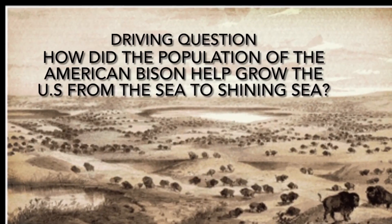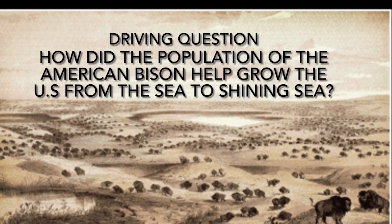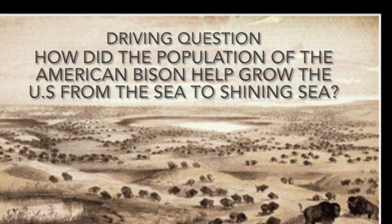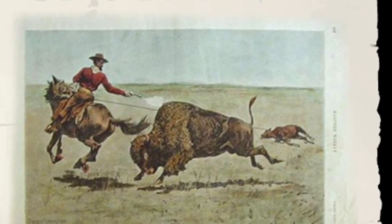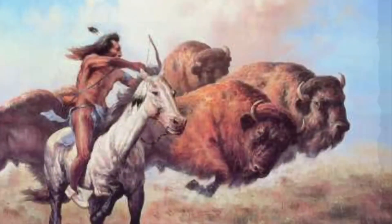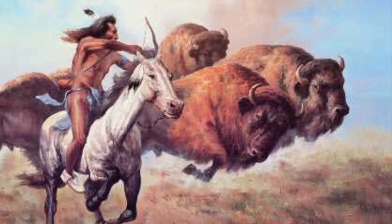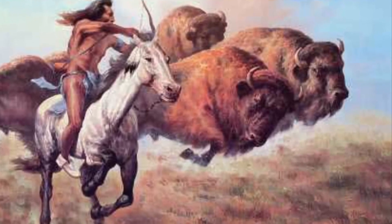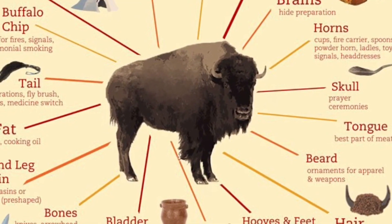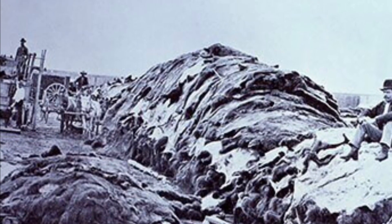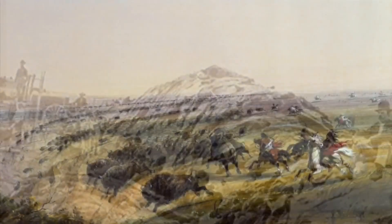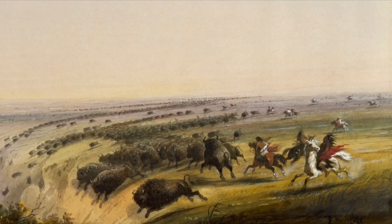The driving question: How did the population of the American bison help grow the U.S. from sea to shining sea? English-speaking settlers were threatened by the nomadic ways of the Native Americans, who for a thousand years had lived migratory lives following the great herds of buffalo. To these people, the buffalo was the ultimate companion, providing food, clothing, and shelter, and nearly every other material needed. The English-speaking settlers thought this was an opportunity to get rid of the Native Americans staying at the Great Plains, which eventually caused the Native Americans to move and spread around, causing the U.S. to grow.